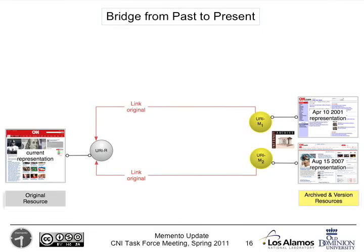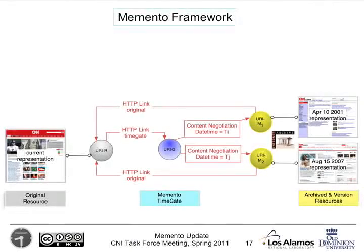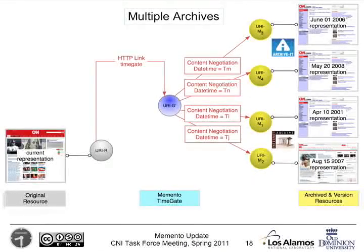We also want a bridge from the past to the present. There's a link back from the archived resources through to the current representation at CNN.com. That's the entire framework that allows us to get from current resources through to their archived state. This solution works in a very distributed fashion — you can have multiple archives all integrated within the same system, such as the Internet Archive, Archiveit, and all of the national libraries' archives.